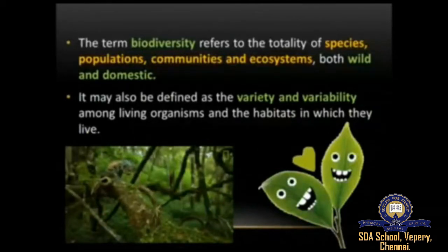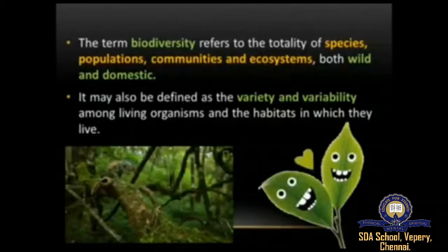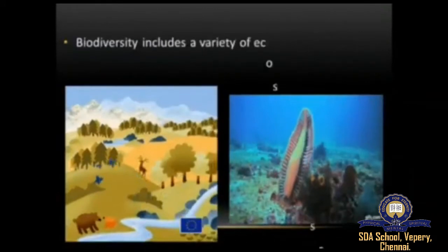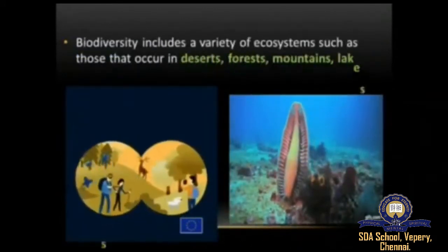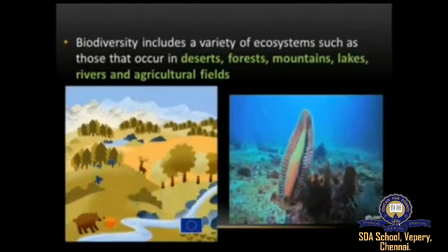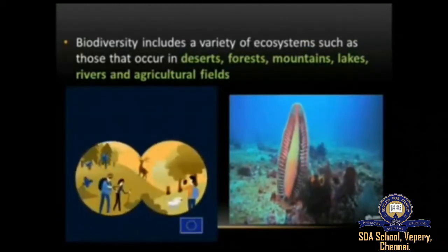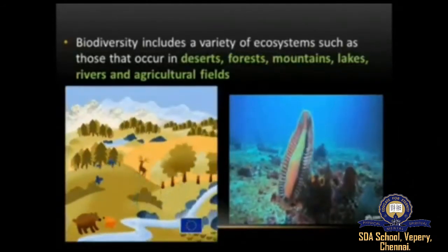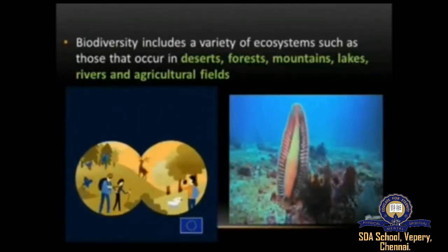Biodiversity refers to the totality of species, populations, communities, and ecosystems — it includes both wild and domestic. It includes a variety of ecosystems such as those occurring in deserts, forests, mountains, lakes, rivers, and agricultural fields. In each ecosystem, living creatures including humans form a community, interacting with one another and with other animals, plants, air, water, and soil around them.